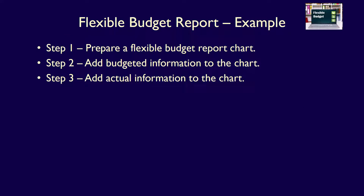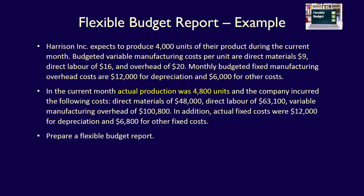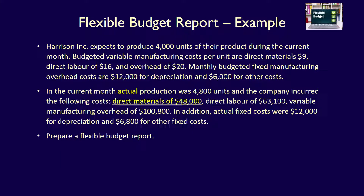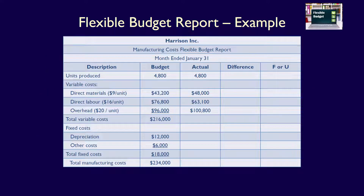We can now move on to step 3: add the actual information to the chart, starting with actual production of 4,800 units at the top of the Actual column. We now need the actual variable costs from the question: actual direct materials $48,000, actual direct labor $63,100, actual variable manufacturing overhead $100,800. Transferring these to the chart and adding them together, we get total actual variable costs of $211,900.